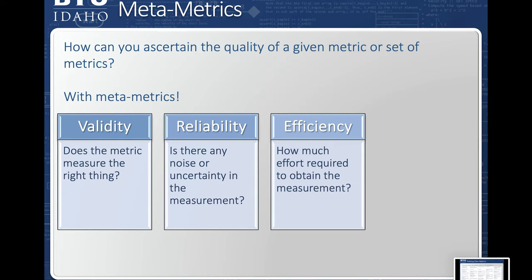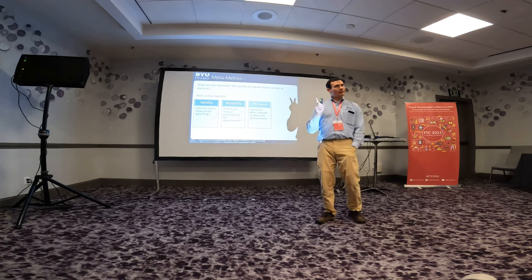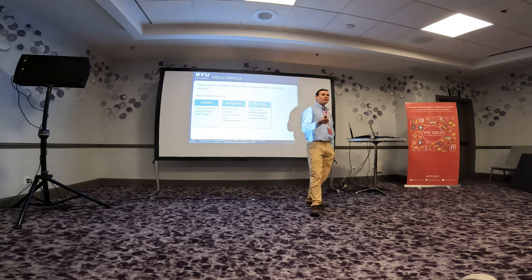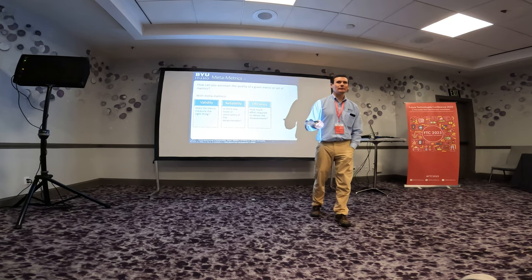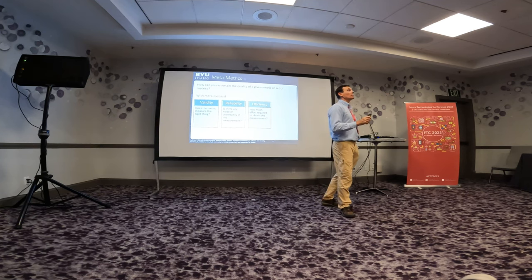Let me share the importance of these three metametrics with an example. Say I'm a track coach and I want to figure out who will participate in the 100-meter dash, so I pick someone who has red shoes because last year's winner had red shoes. Is it efficient? Yes. Is it reliable? Yes, I'm good at finding red. But is it valid? No — it has nothing to do with how fast someone runs. If a metric is invalid, nothing else matters. It is the single most important thing.